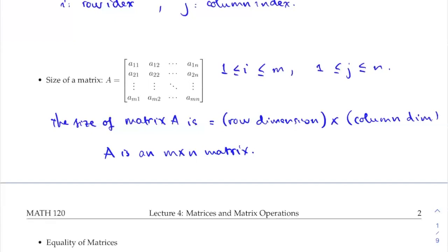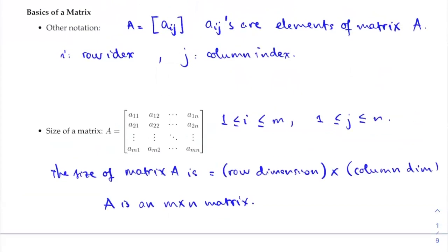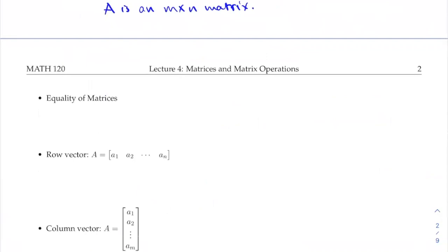That's how you identify the size of the matrix. Not only can you list all elements out, you can also use the notation A-sub-i,j where i is the row index and j is the column index. The next definition is the equality of matrices.